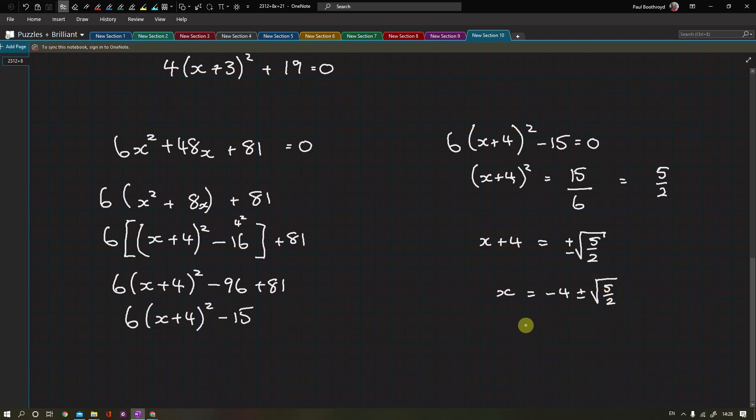If you use a calculator, remember most exams ask for three significant figures in our answers. So 5 over 2, the square root of that number is 1.581.